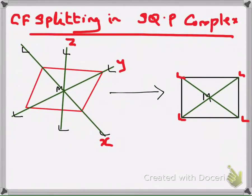Dear friends, today we have to discuss another type of crystal field splitting. Today we have a square planar complex. In the last two classes we studied crystal field splitting in octahedral and tetrahedral complexes. The coordination number of tetrahedral as well as square planar complexes is 4, and that of octahedral complex is 6.